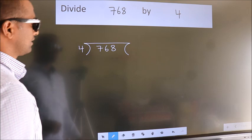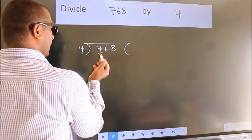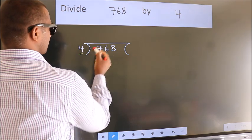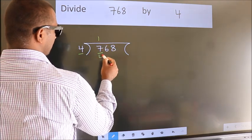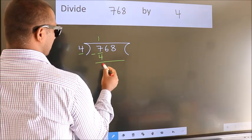Next, here we have 7, here 4. A number close to 7 in the 4 table is 4 once 4. Now we should subtract. We get 3.